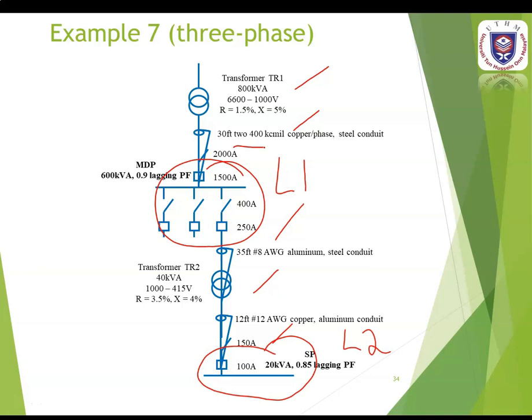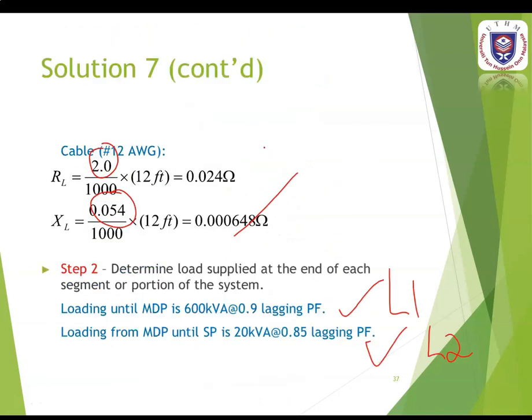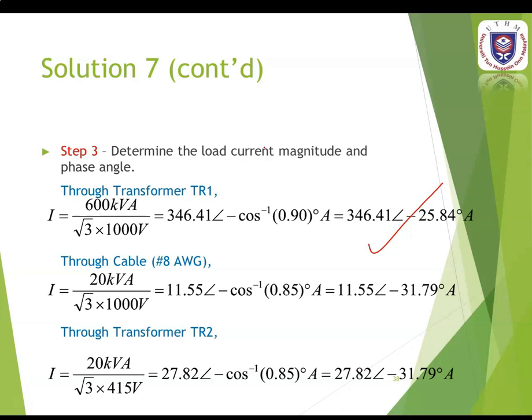The current flows from the transformer to the cable 400 kcmil. For one cable, divide the total magnitude by 2. For cable 8 AWG, insert the apparent power divided by root-3 times 5000 volts. This 5000 volt value is used because we have the main distribution panel at 1000 volts in this section.